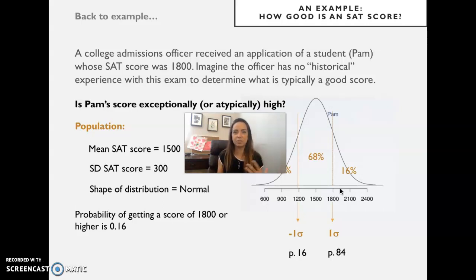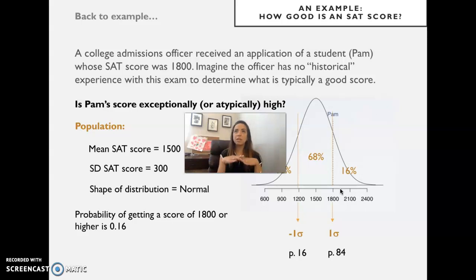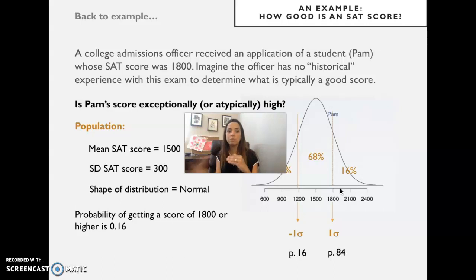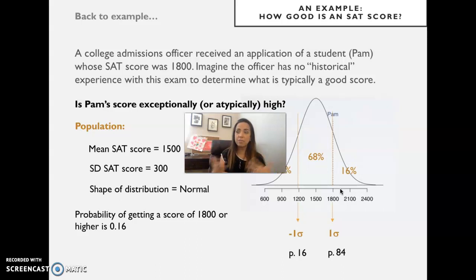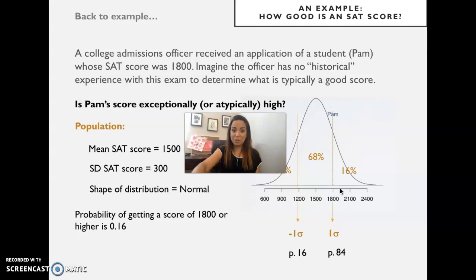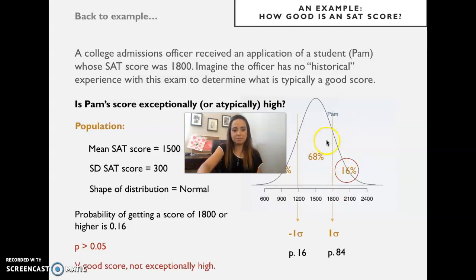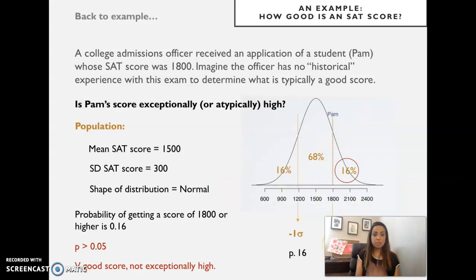If you think 0.05 is a bit arbitrary, it is convention. It's kept low because we only want to call things exceptional or atypical if they are really extreme — like people being innocent until proven guilty, or a new medical treatment being considered not effective until proven otherwise. That's the rationale for making the cutoff really low. The score is very good, but not exceptionally high.